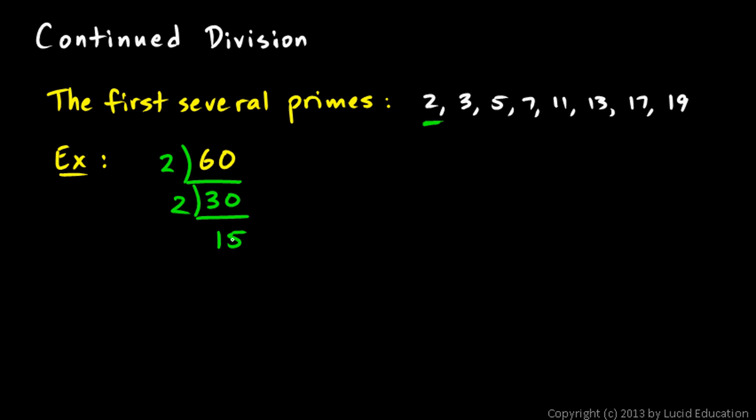And is 15 divisible by 2? It is not. So we move to the next number, 3. Is 15 divisible by 3? It is. It's 3 times 5.